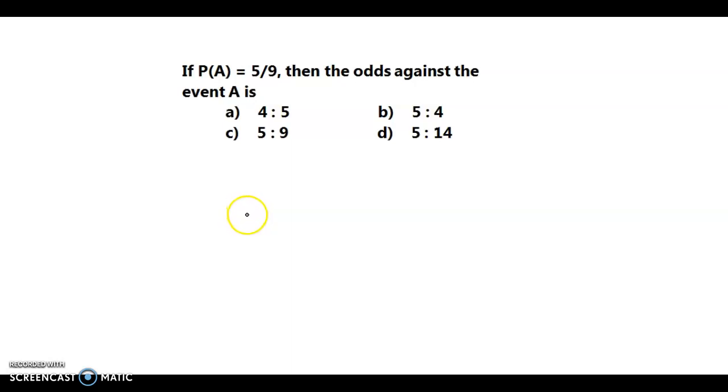Hello and welcome back. We now discuss an example from probability. The question is: if probability of A is 5 by 9, then the odds against the event A is. So we have to find the odds against ratio.